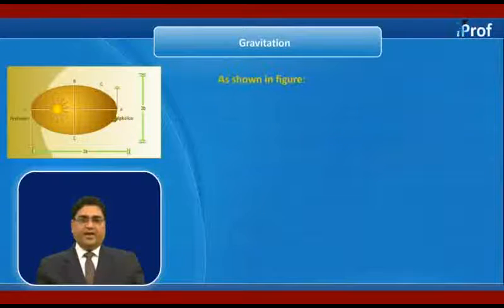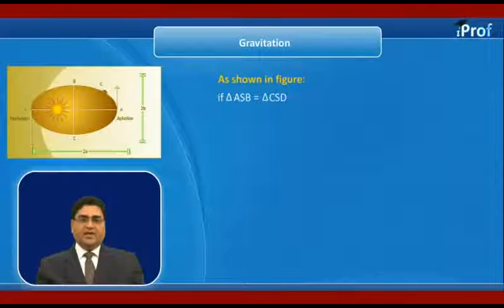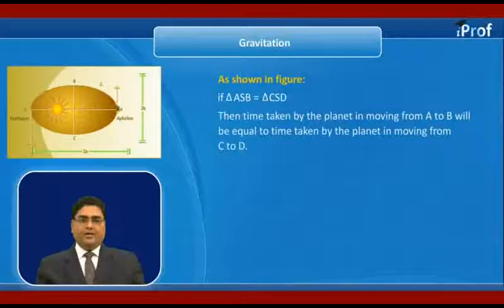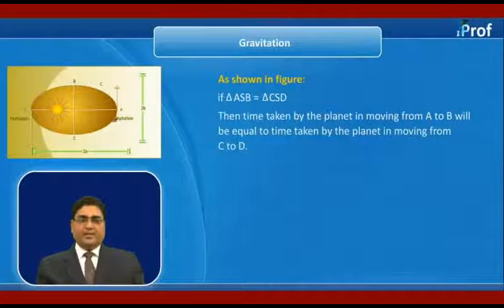As shown in figure, if area ASB is equal to area CSD, then time taken by the planet in moving from A to B will be equal to time taken by the planet in moving from C to D.